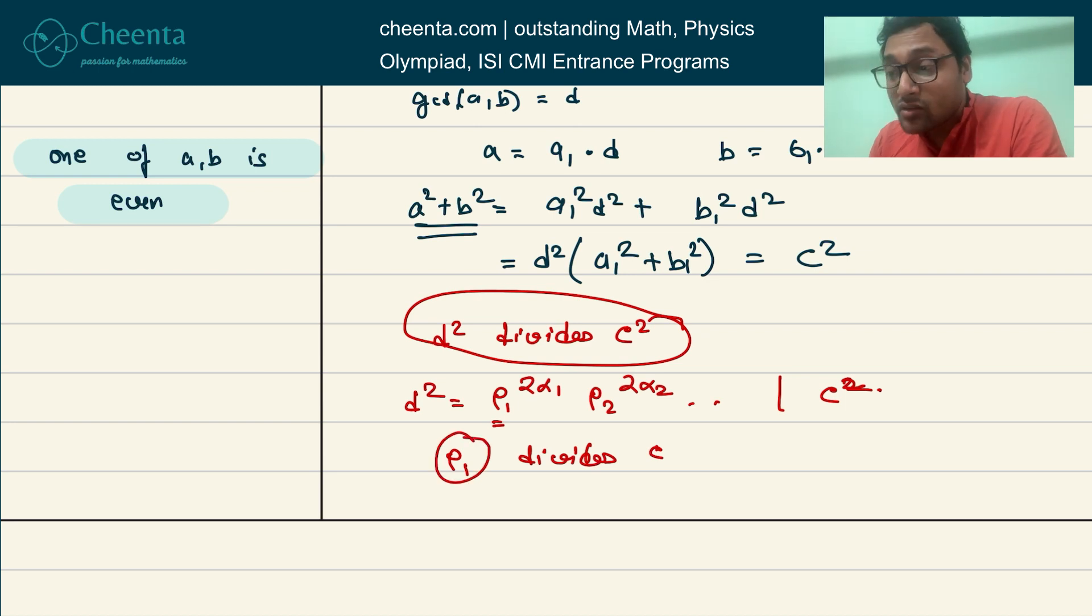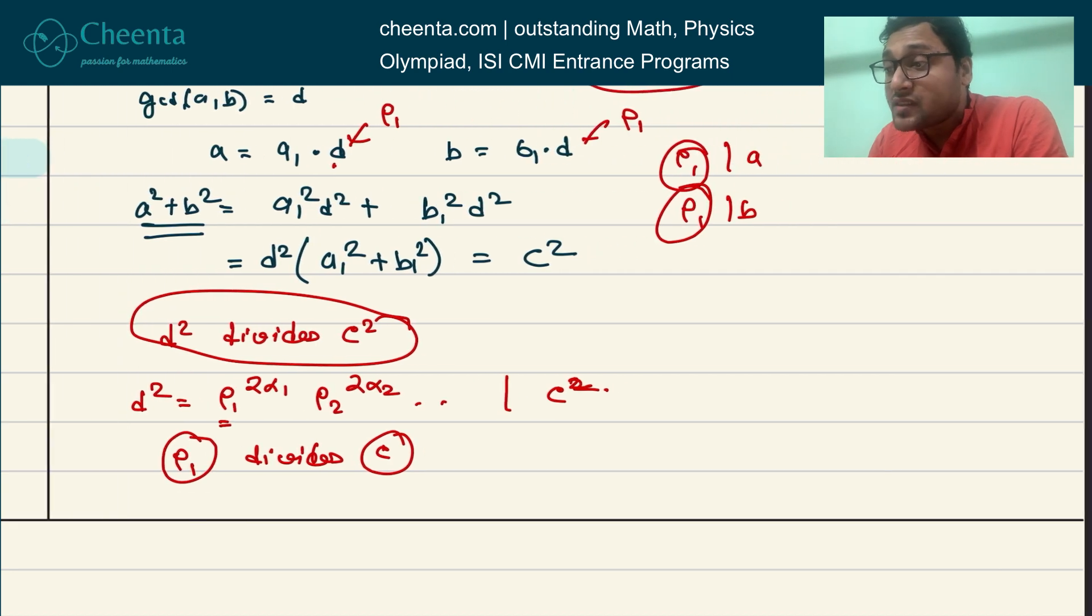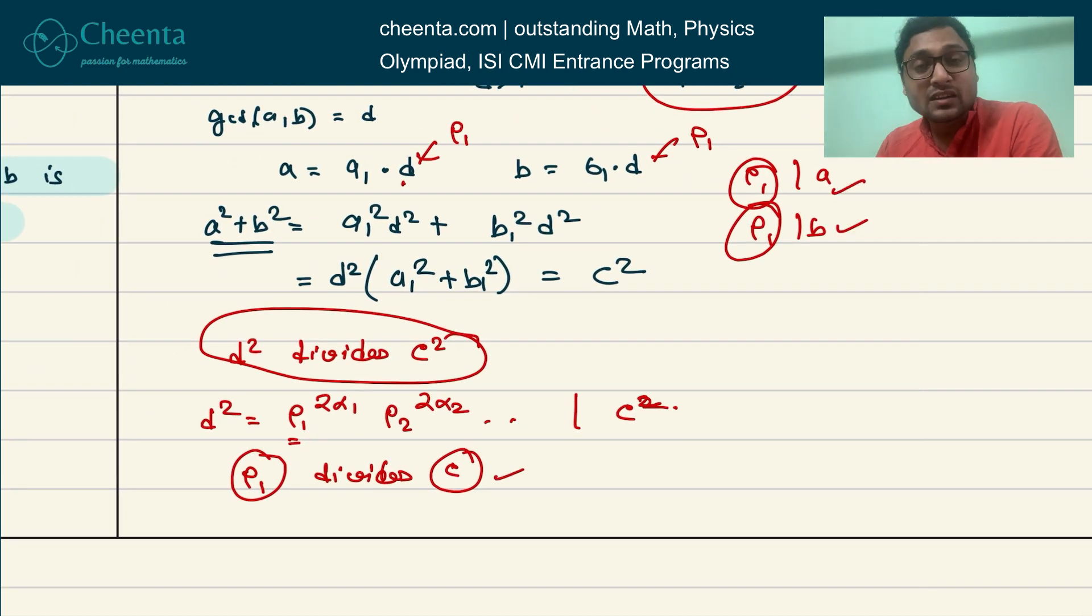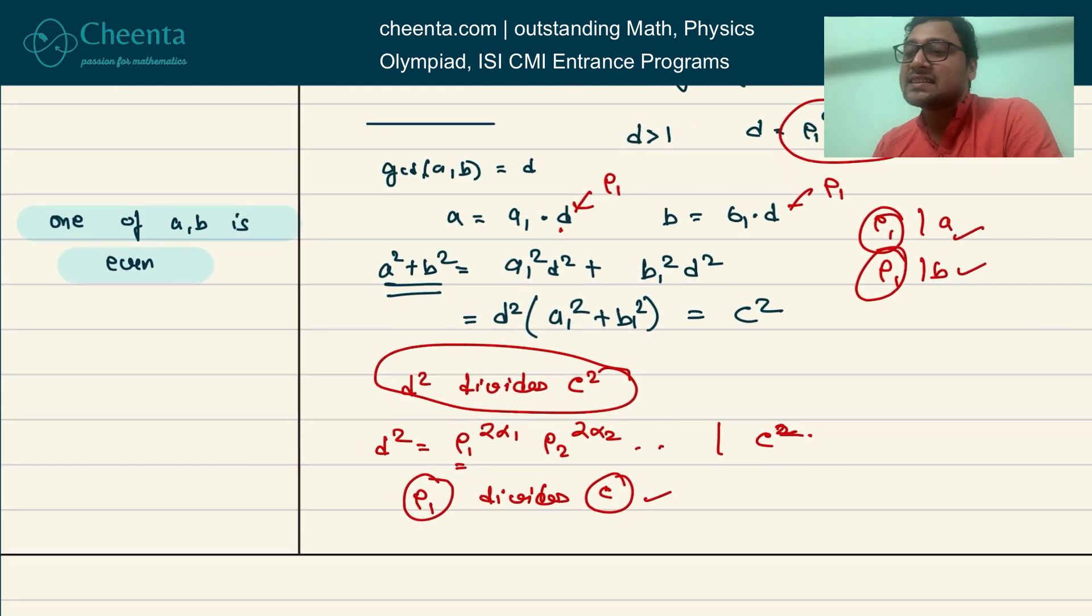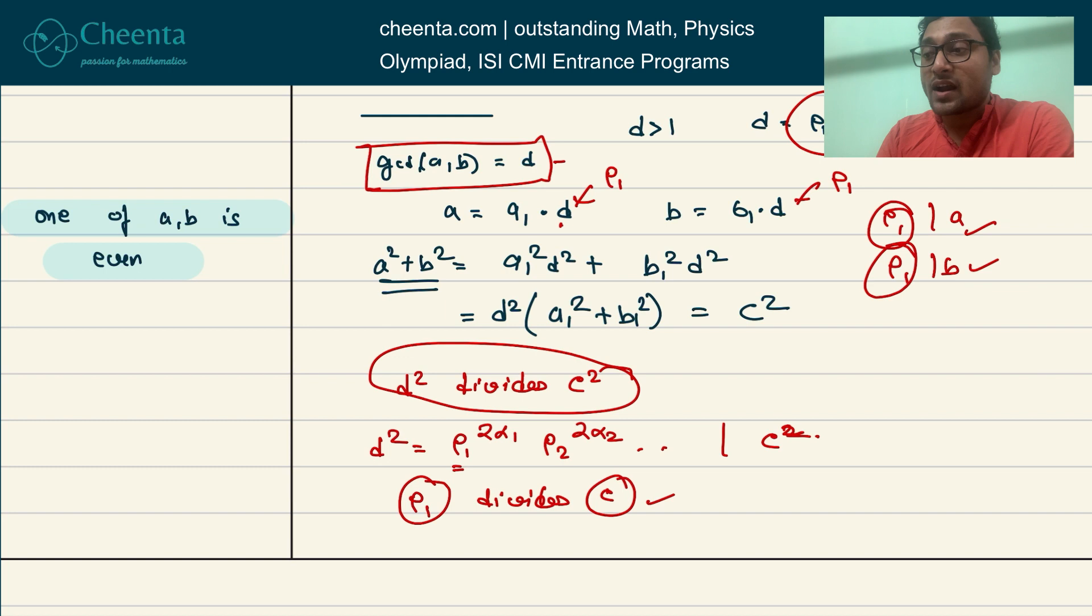So P₁ divides C. Now look at this. P₁ divides C, and since P₁ is inside D, therefore P₁ divides A and P₁ divides B. So P₁ is a prime number that divides all of these three things: A, B, and C. But that's a contradiction because we know that the GCD of A, B, C is 1—because it's a Pythagorean primitive. That was the starting assumption. So we conclude that GCD of A and B must be 1. D cannot be greater than 1.